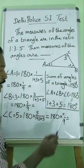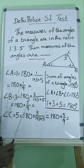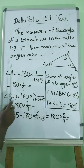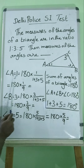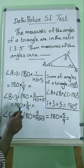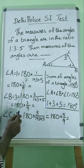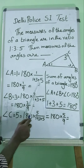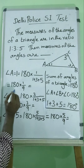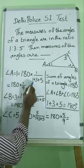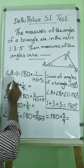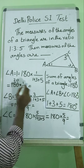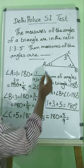Now let's find the values of the three angles. Angle A is equal to 180 degrees multiplied by its ratio, divided by the sum of the ratios: 1 plus 3 plus 5, which equals 9. So we get 180 times 1 divided by 9, which equals 20. Therefore, Angle A equals 20 degrees.